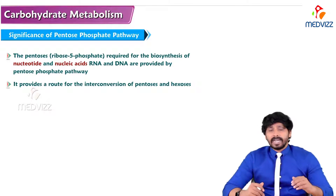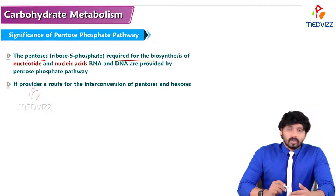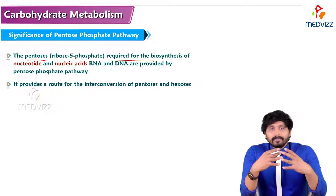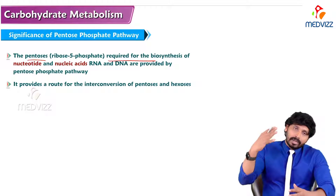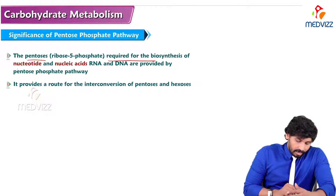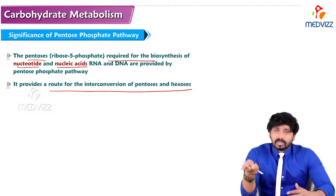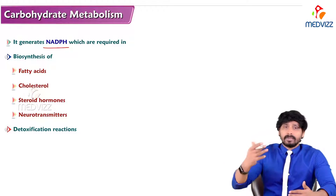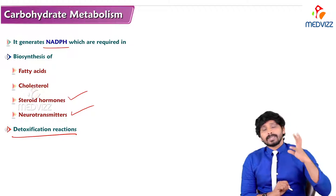The significance of HMP shunt: pentose phosphates are essential because DNA (deoxyribonucleic acid) is made up of deoxyribose — a modified form of ribose — and RNA (ribonucleic acid) is made of ribose sugar. That ribose source comes from HMP shunt for making nucleotides and nucleic acids. The pathway also provides a route for interconversion of pentoses and hexoses. The main products include NADPH for fatty acid synthesis, cholesterol synthesis, bile acid synthesis, steroid hormone formation, neurotransmitter generation, and detoxification reactions in the liver, all of which require NADPH.